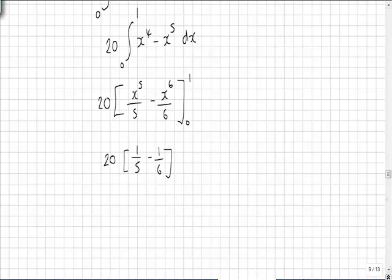So it is 20 brackets 1 fifth minus 1 sixth which is equal to 20 over 30 which is 2 thirds.